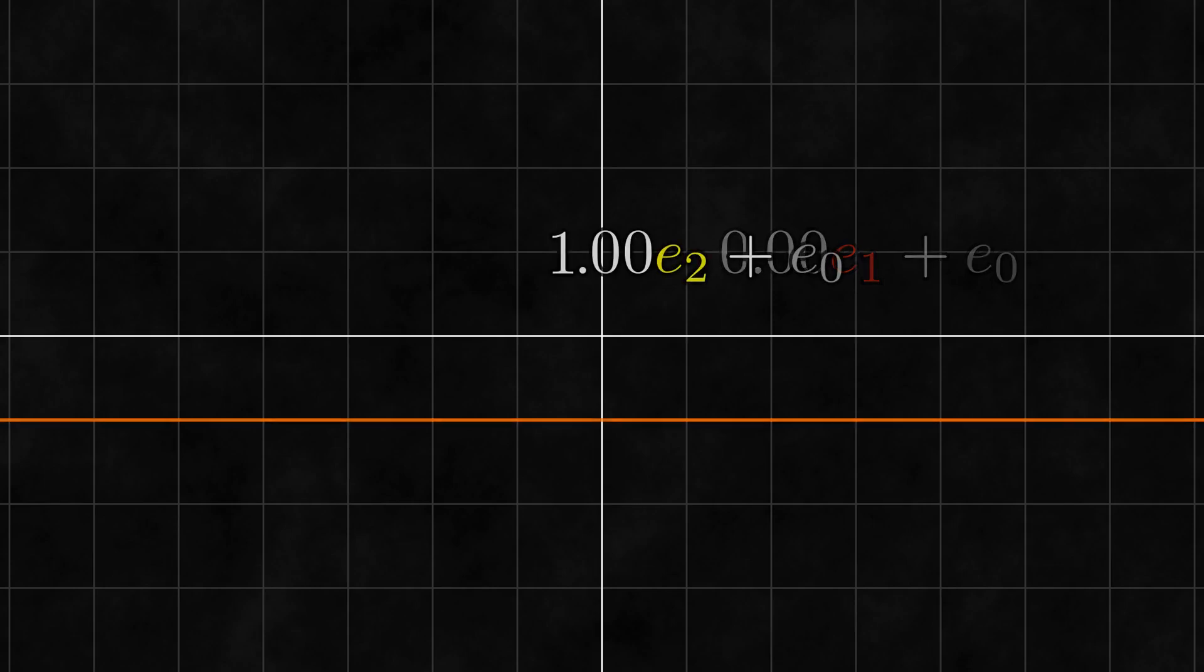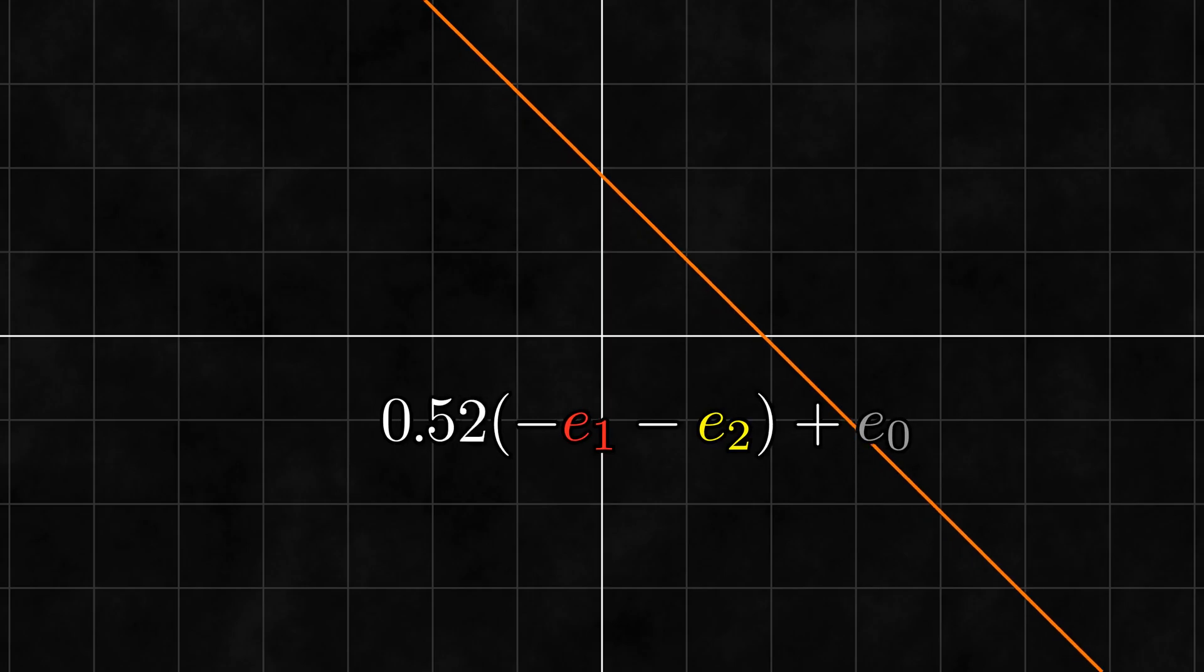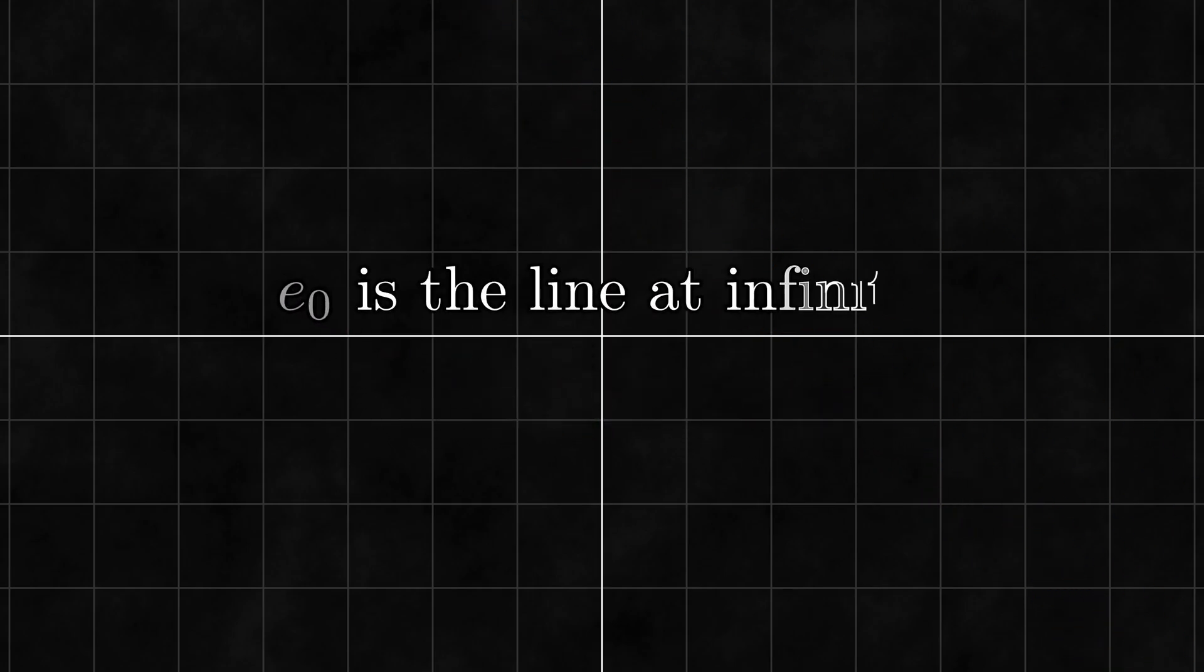In fact, because we can approach e0 from any direction, it is more accurate to say that e0 is THE line at infinity, which paradoxically goes around the whole plane. If you haven't seen things like points at infinity used in geometry before, this might seem strange, but it turns out that having objects at infinity can be very useful at times.